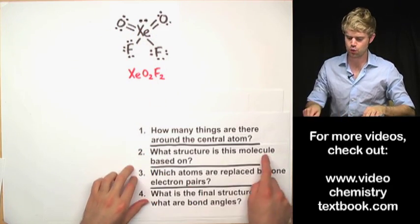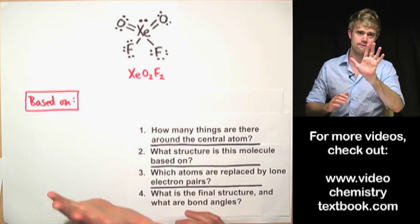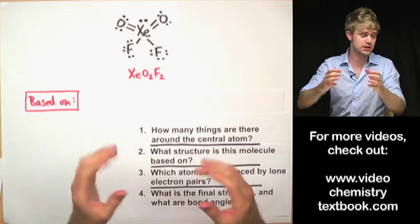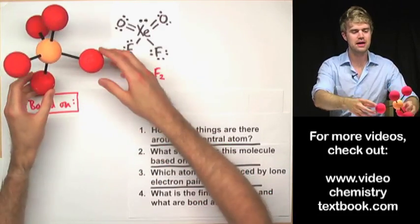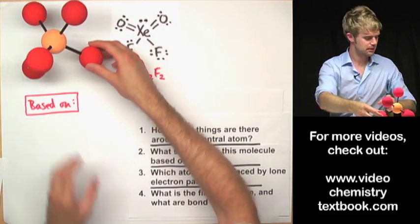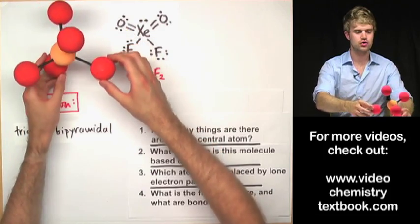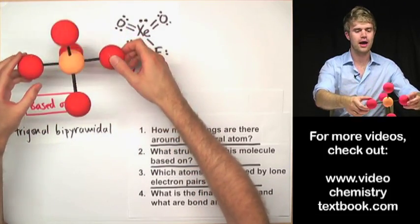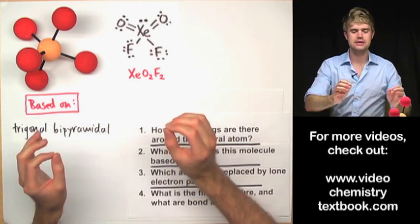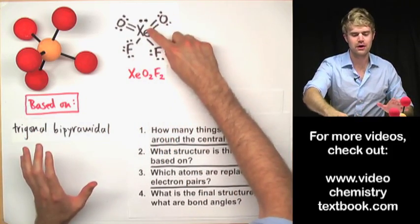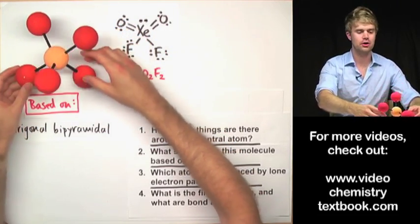Number two asks: what structure is this molecule based on? What I mean is, if something has five things around the central atom, it's based on a particular structure. It's going to be based on the trigonal bipyramidal shape. So this is the shape — trigonal bipyramidal — that we want to have in our minds. If all five things surrounding xenon were atoms, then it would be a trigonal bipyramidal shape. But they're not.